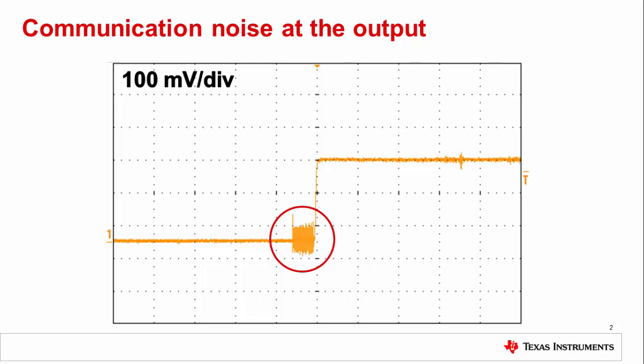This can come from two places: through the device and through the board. The specification for digital feed-through is included in the device datasheet, and you should expect to see that behavior for every code transition.